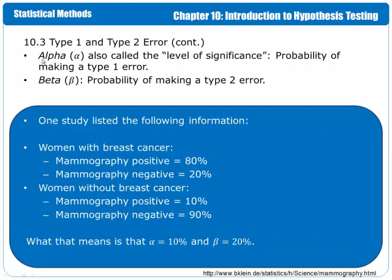The Greek letter alpha, also called the level of significance, is the probability of making a type 1 error. The Greek letter beta is the probability of making a type 2 error.